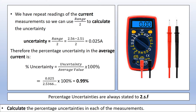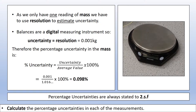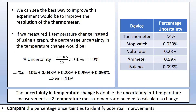The last measurement is from the mass. We only took one measurement, so we use the resolution to estimate uncertainty. The resolution is 0.001 kilograms. It's a digital instrument, so uncertainty equals the resolution. The percentage uncertainty is 0.001 divided by 1.016, giving 0.098% — a tiny contribution. Combining all these, by far the biggest contribution to uncertainty is coming from our thermometer, so to improve this experiment we'd want a thermometer with a better resolution.